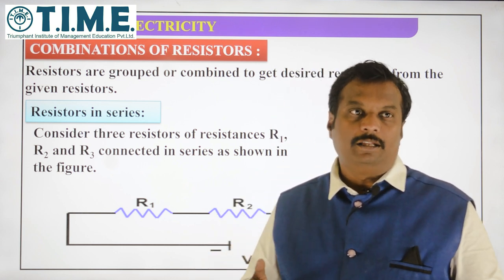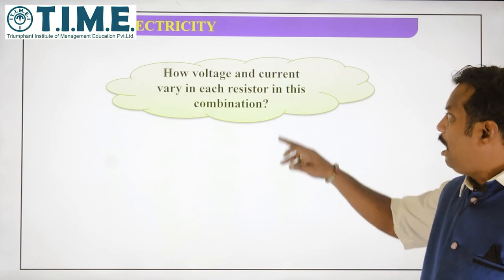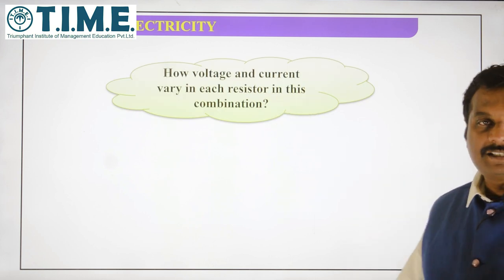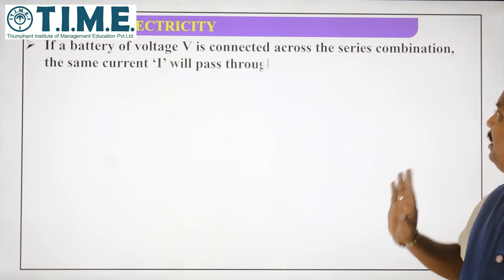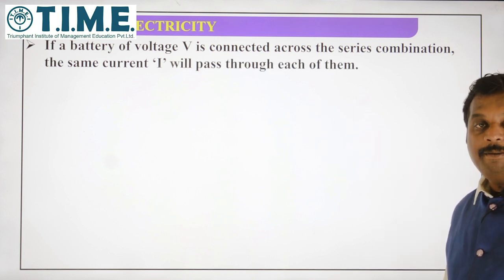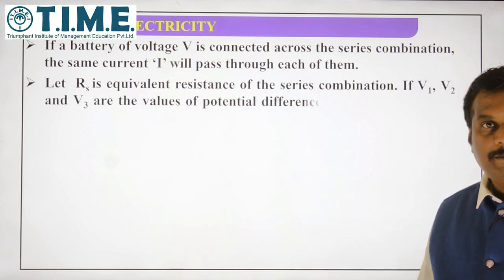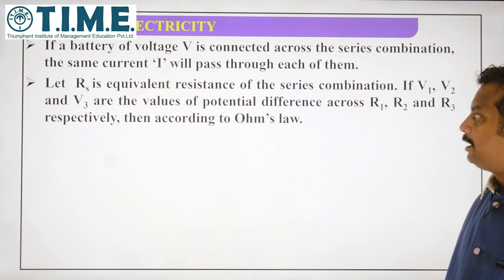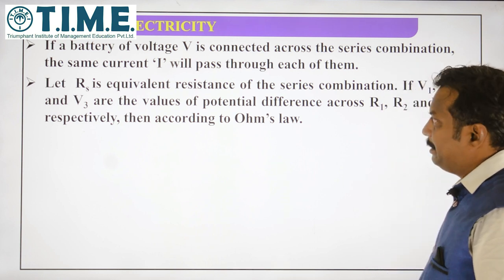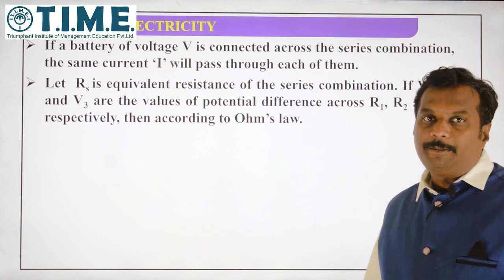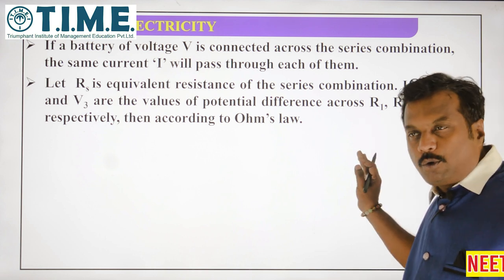This is the voltage and current in this entire combination. How voltage and current will vary in each resistor — let us see. A battery is connected with voltage V across this series combination. The same current will flow through. The equivalent resistance is taken as RS for series combination and RP for parallel combination. If V1, V2, V3 are the values of potential difference across R1, R2, R3 respectively.